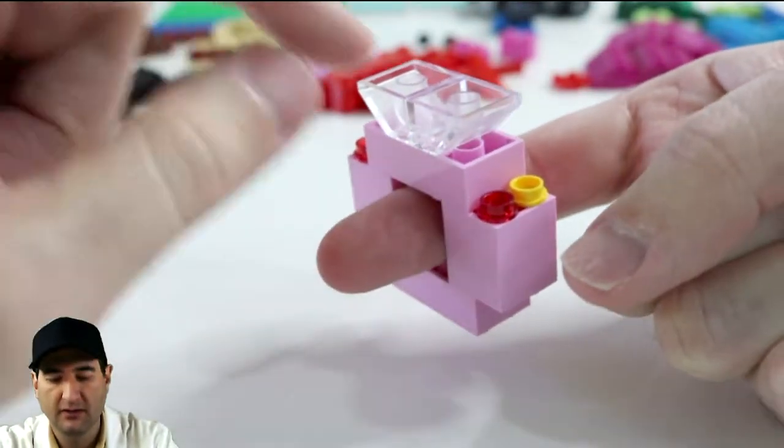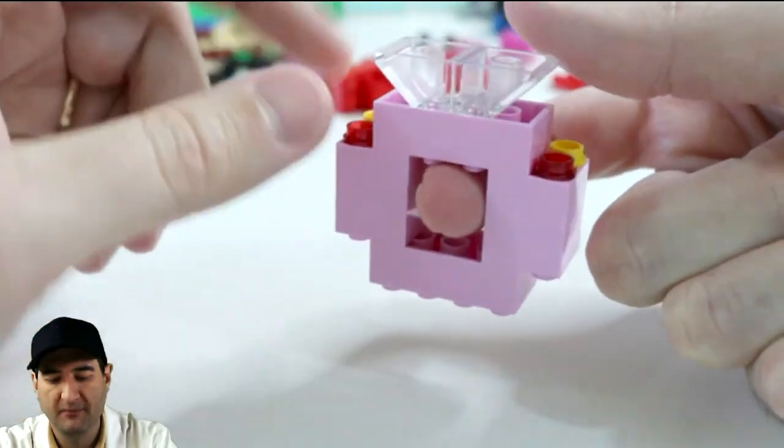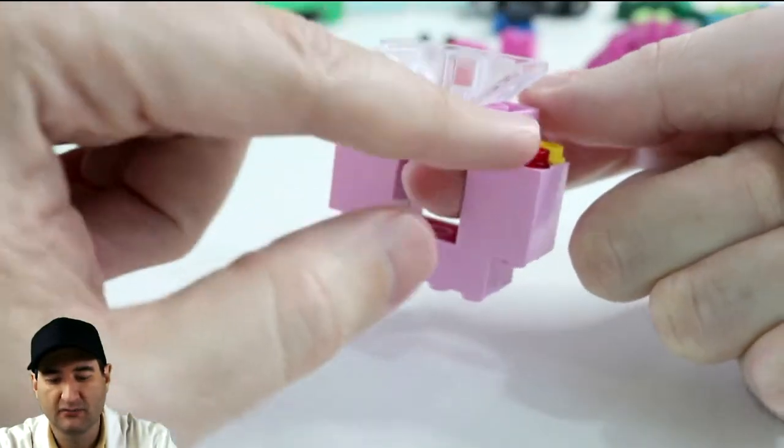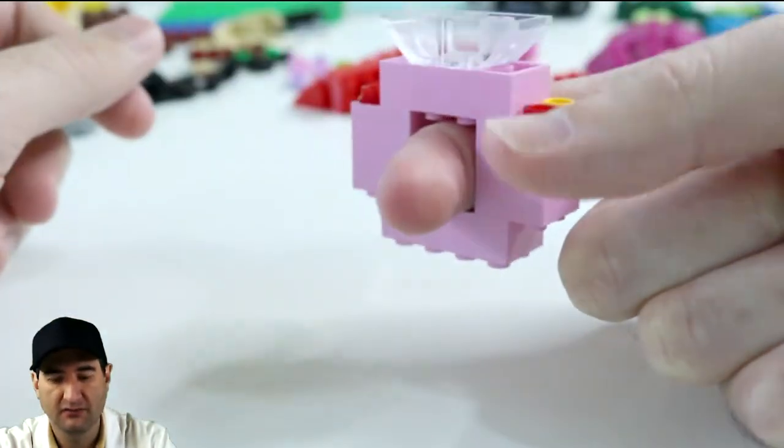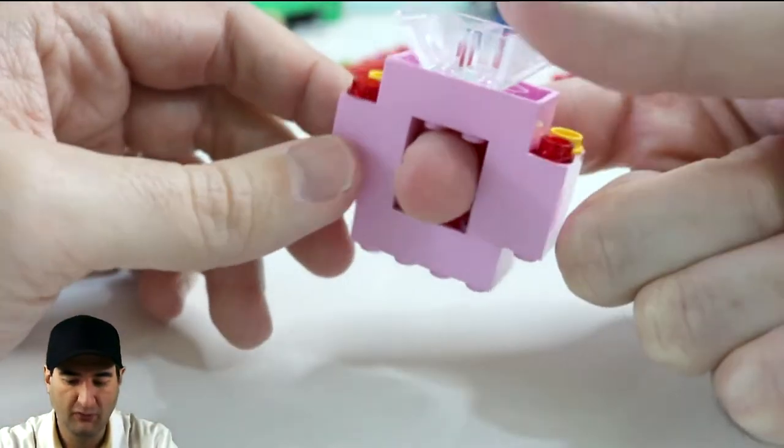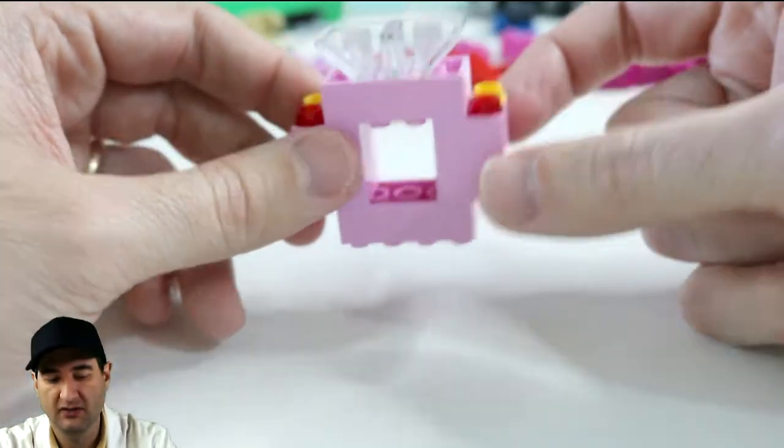So this is our diamond ring that we've created in under five minutes of time and it's got the diamond on top. The ring is kind of an oval shape but it fits a finger. My finger is a little bit too big for it but I bet my wife's finger would actually fit real nice in there.